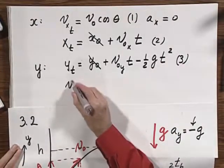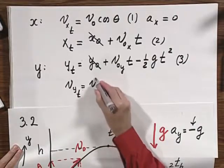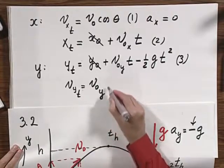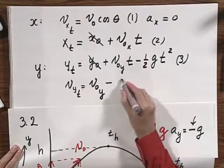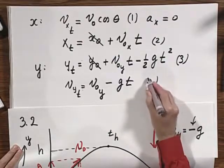And the velocity in the y-direction, as a function of time, equals the velocity in the y-direction at time t equals zero minus g t, and that is my equation number four.